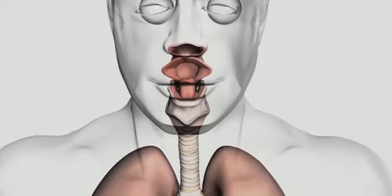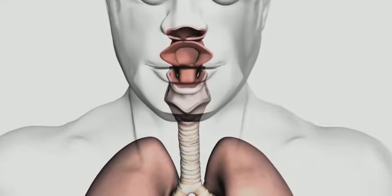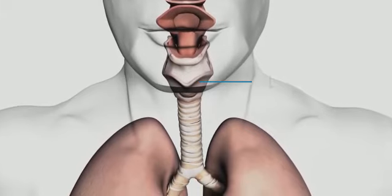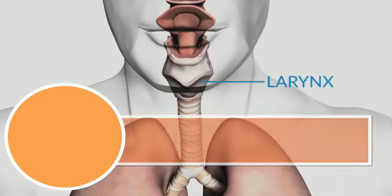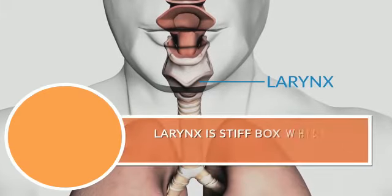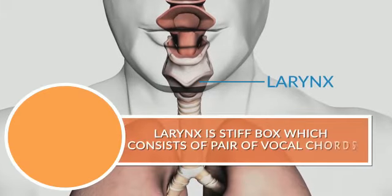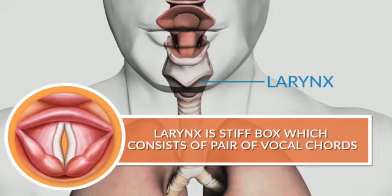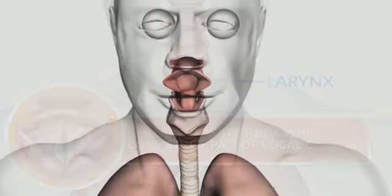From the pharynx, air enters into the larynx. The larynx is a stiff box which consists of a pair of vocal cords. These vocal cords vibrate when air enters inside and produce sound.